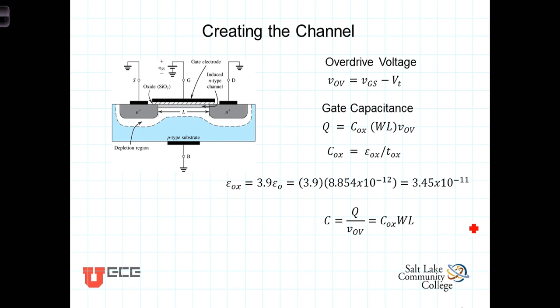In this video we're going to discuss the conditions necessary for a conducting channel or the inversion layer to form. When the gate is grounded so that no channel is induced, the field effect transistor consists of two PN junctions between the source and the substrate and the drain and the substrate.